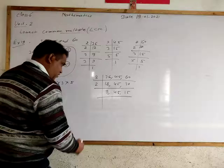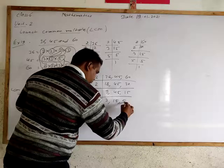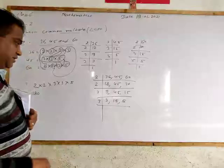18 and 30 can be divided by 2, so we divide again by 2. We get 9, 45, and 15.